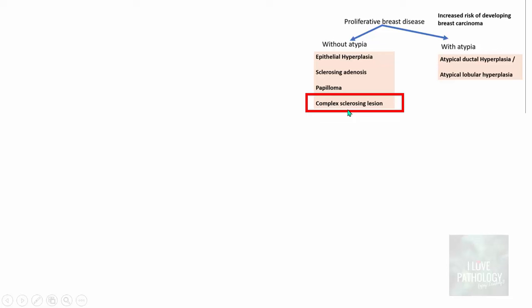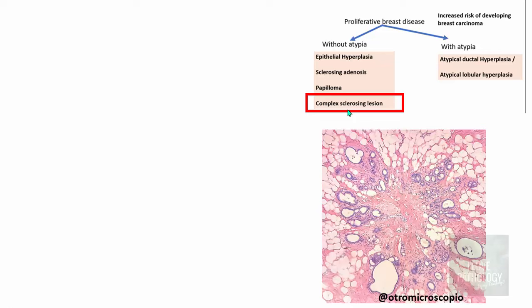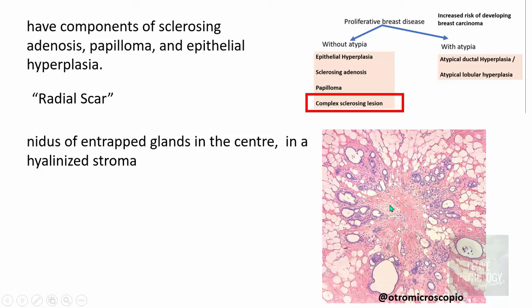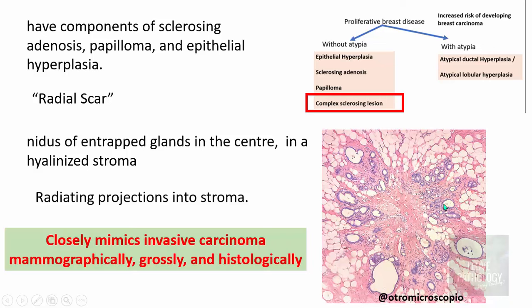The complex sclerosing lesion is essentially a mixture of sclerosing adenosis, papilloma, and epithelial hyperplasia. It is also referred to as a radial scar because there is a nidus of entrapped glands at the center with hyalinization of the stroma, and radiating projections into the stroma comprising ducts and lobules. This lesion is clinically important because it closely mimics invasive carcinoma mammographically, grossly, and even histologically, making it critical to differentiate from invasive carcinoma.